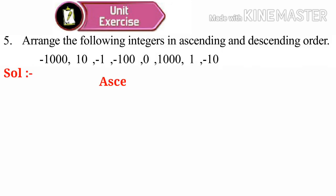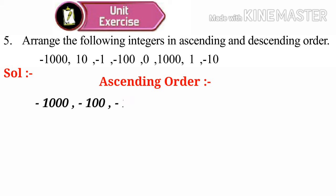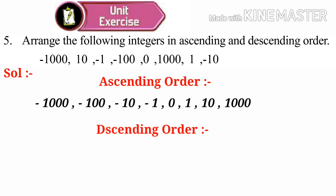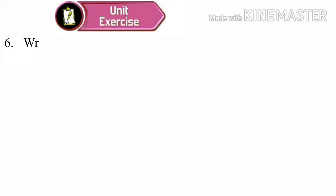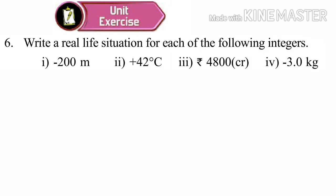Fifth problem: arrange the following integers in ascending and descending order. Ascending order means small numbers to big numbers — first negative numbers, then 0, then positive numbers: minus 1000, minus 100, minus 10, minus 1, 0, 1, 10, 1000. Descending order means big numbers to small numbers — positive numbers first, then 0, then negative numbers: 1000, 10, 1, 0, minus 1, minus 10, minus 100, minus 1000.